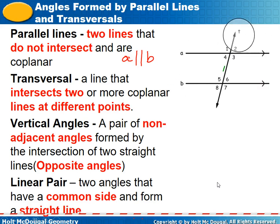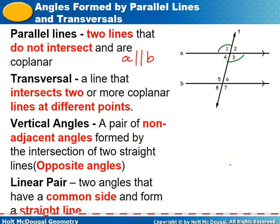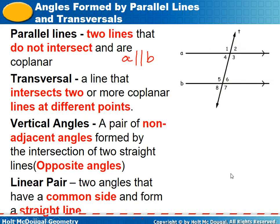The transversal intersects two or more lines. Vertical angles are a pair of non-adjacent angles formed by the intersection of two straight lines. So angles one and three are vertical angles, as are two and four, five and seven, and six and eight. Those are all pairs of vertical angles — and vertical angles are congruent.